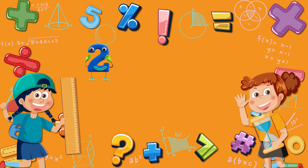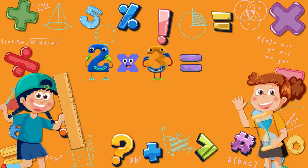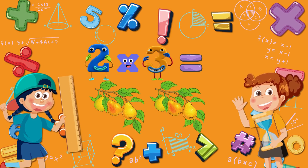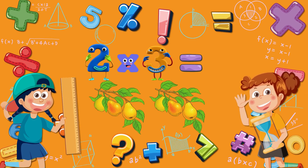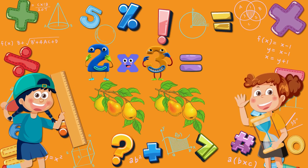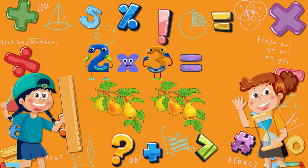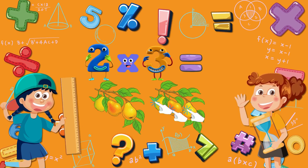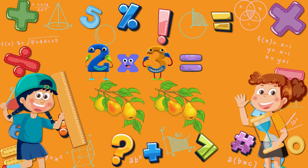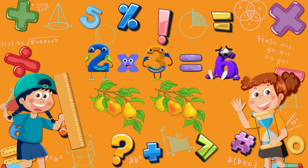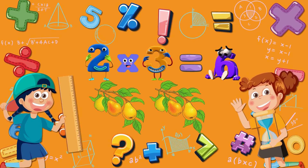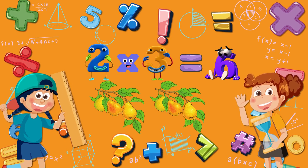Two times three is equal to? Two branches, each with three pears. Let's count together. Three pears on the first branch, and three pears on the second branch. Three plus three is equal to six. Great. Two times three is equal to six.